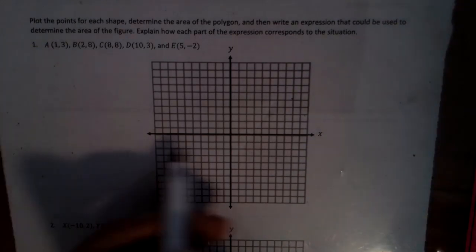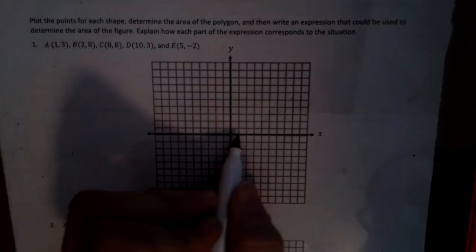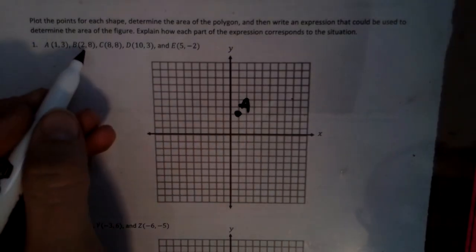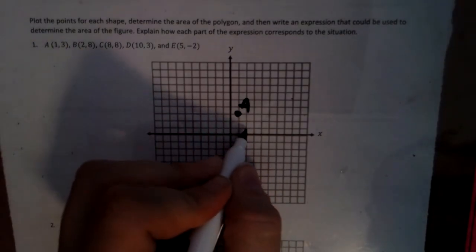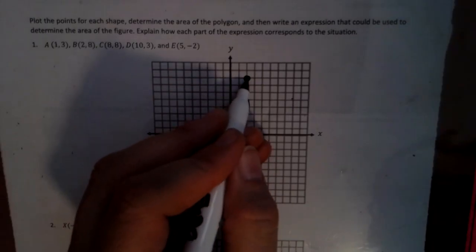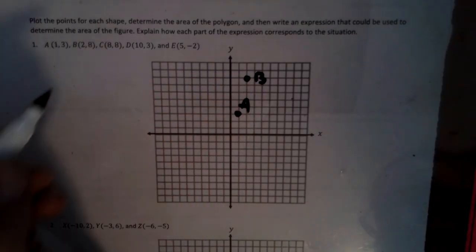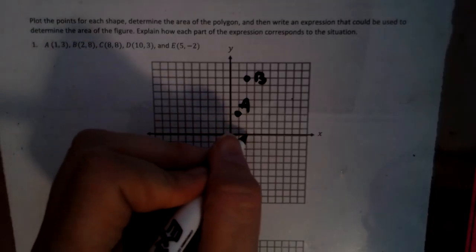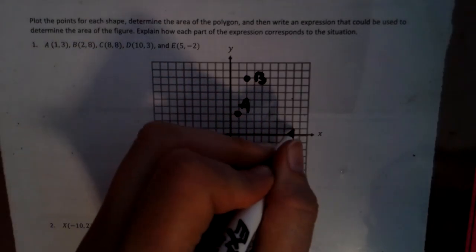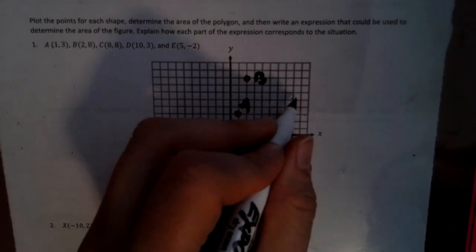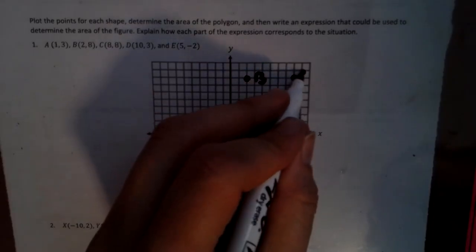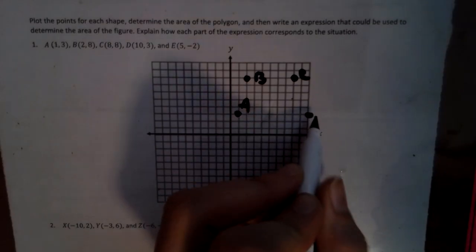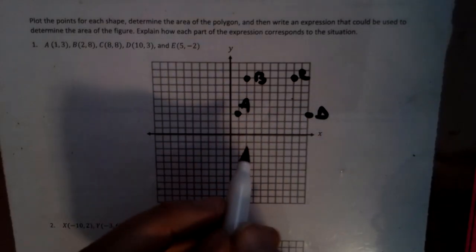So here we go, we're going to plot A. Now remember we have to travel the x before the y, so one up three, there's our A. B is over two, up eight. C is over eight, up eight. That's C.